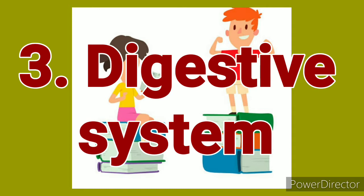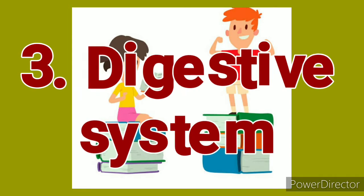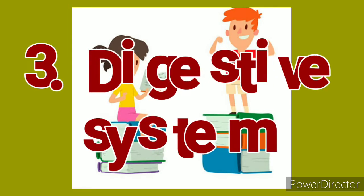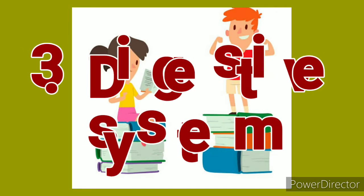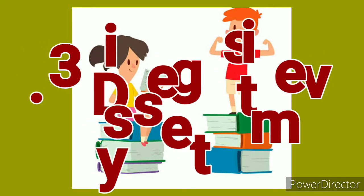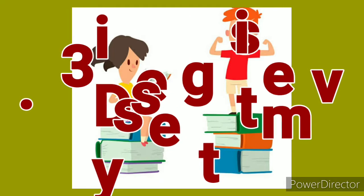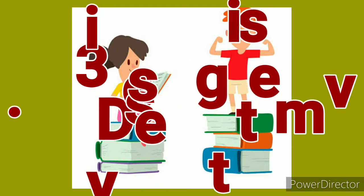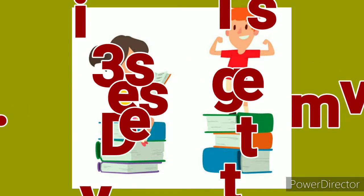After mixing with saliva, the food goes into the stomach through the esophagus, also known as the food pipe. Undigested food is passed out of the body through the anus.